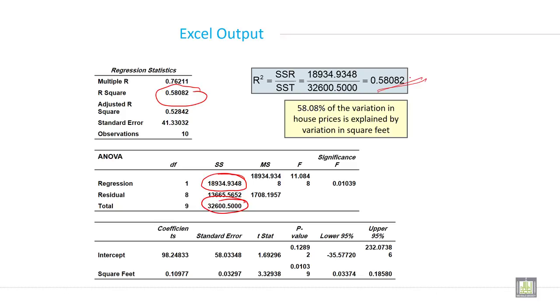It means 58% of the variation in house price is explained by the variation in square feet. It means 42% other variables contributed to the house price. So this is very important.